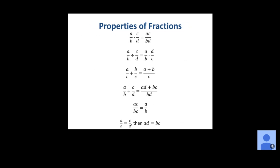Some properties of fractions: to multiply two fractions, multiply straight across — numerators give a times c, denominators give b times d — resulting in ac over bd. For division, multiply by the reciprocal. You may have heard 'keep, change, flip': keep the first fraction, change division to multiplication, flip the second fraction. That gives a/b times d/c, and then you follow the multiplication property to get the answer.